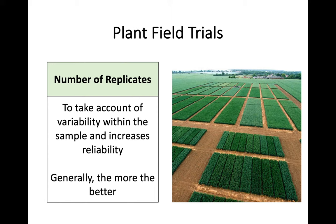Second, you need to take into consideration the number of replicates you use. Just like every other experiment in biology, you need a high number of replicates in order to take into account variability within the sample — because some plants will be duds that won't grow as well, or some will grow above the average. You need to account for that variability, but you also need to increase reliability. Generally, the more replicates the better.